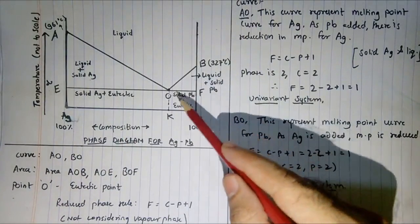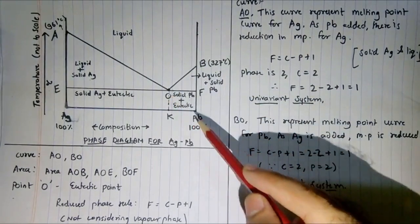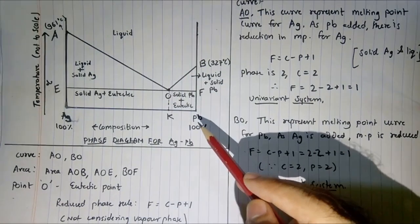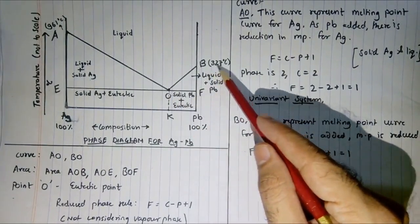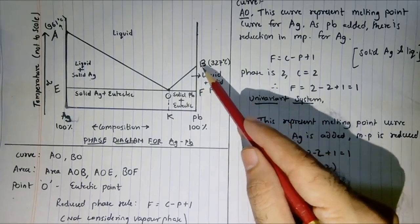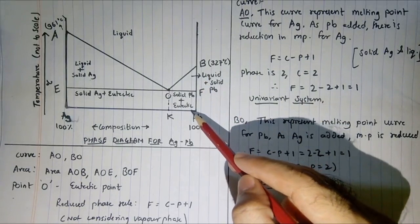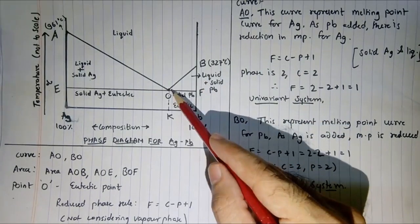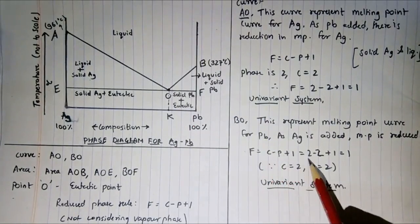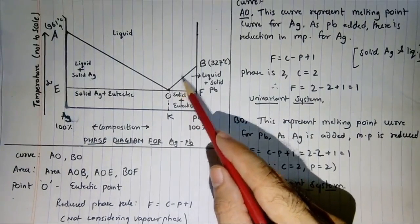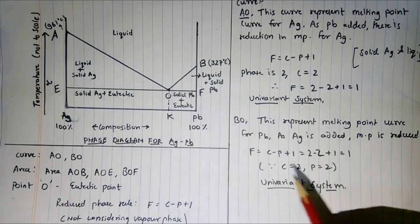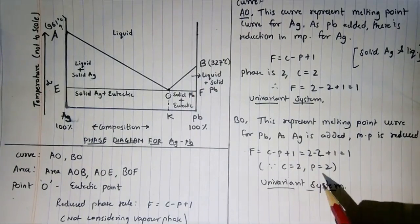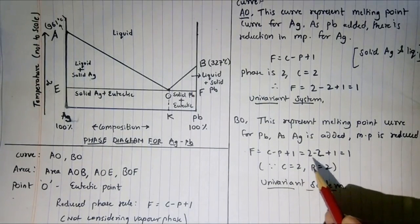Curve BO represents the melting point of lead. If you increase the percentage of silver in lead, the melting point slowly reduces until point O. The melting point of pure lead is 327°C; as you slowly add silver, the melting point reduces until point O. Again, the degree of freedom is the same: f = c − p + 1 = 2 − 2 + 1 = 1. This curve represents solid lead and liquid (mixture of lead and silver), giving two phases and two components — a univariant system.